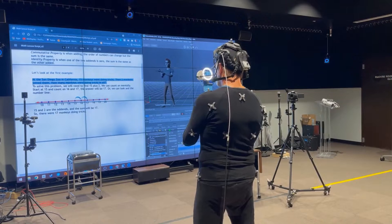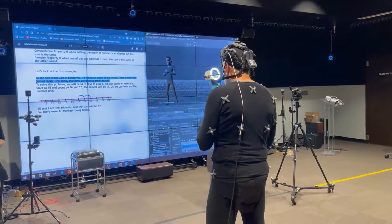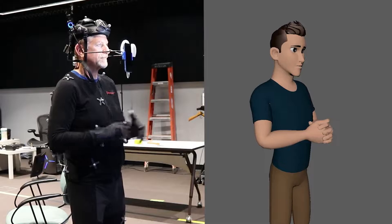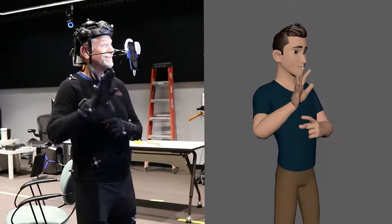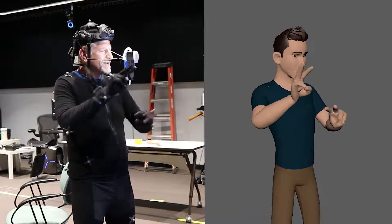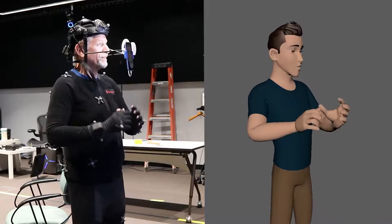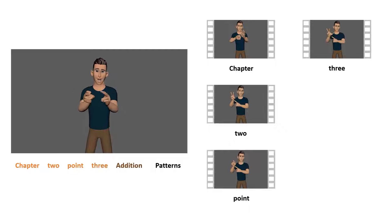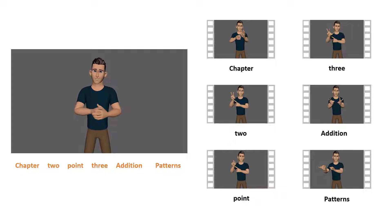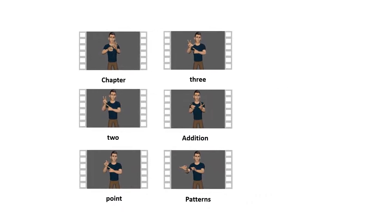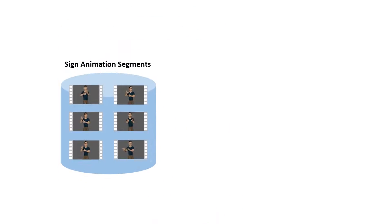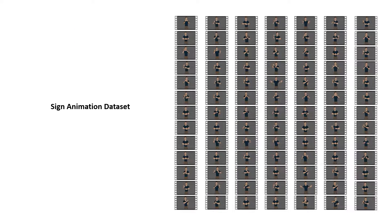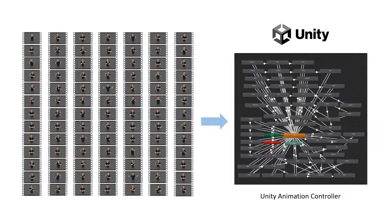We cleaned up intersecting meshes and noises of the mocap data in Maya. We recorded both American Sign Language and Signed Exact English for the math lesson, and we used the SEE dataset in our system. As you can see from this example, we are able to cut corresponding sign segments for each word in a sentence from the SEE sign animation. After preparing these sign animation segments, they were saved into the sign animation dataset and mapped into the animation controller in Unity game engine, ready to be triggered.